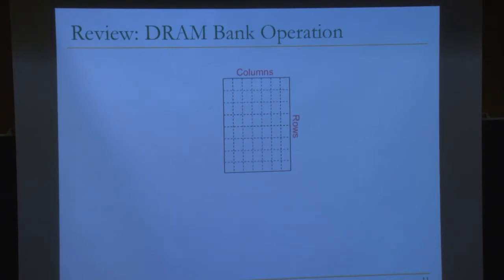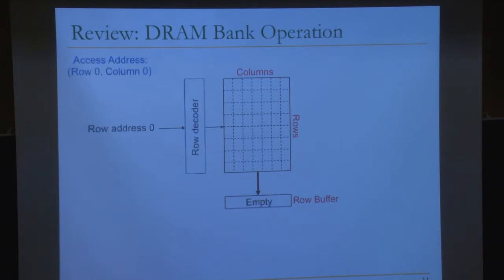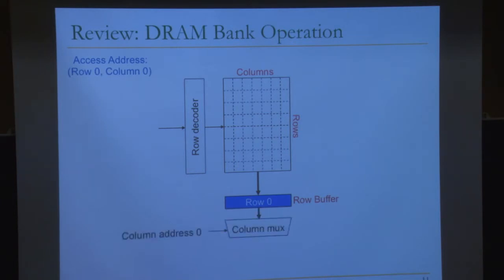This has request buffers for each bank and per-bank schedulers, with a bus scheduler that arbitrates between those schedulers because the bus is shared across different banks. A DRAM bank looks like a two-dimensional structure — columns and rows — with a row buffer where sense amplifiers sit. Initially the row buffer is empty. You access a row, activate it, which places the row into the row buffer. Then the memory controller sends the column address, and the DRAM chip muxes out that column data.